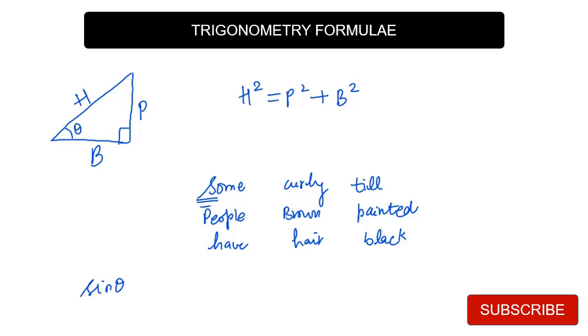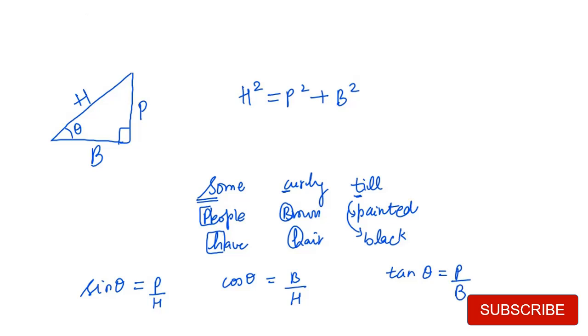Let's say you have to write sin theta. Sin theta will be dependent on perpendicular and hypotenuse, so it is P over H. Cos theta comes from curly, so it is B over H, base over hypotenuse. Then we have tan theta, which will be P over B, perpendicular over base. These are the formulas we get from this saying.